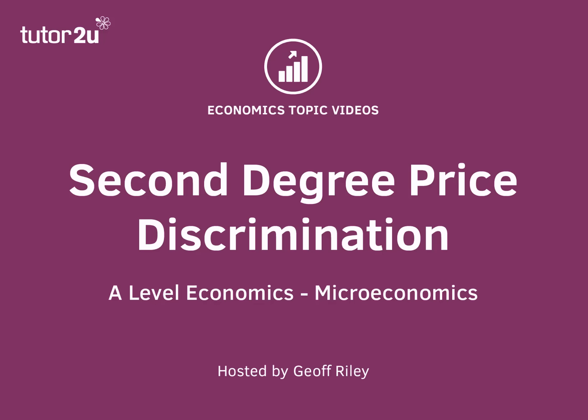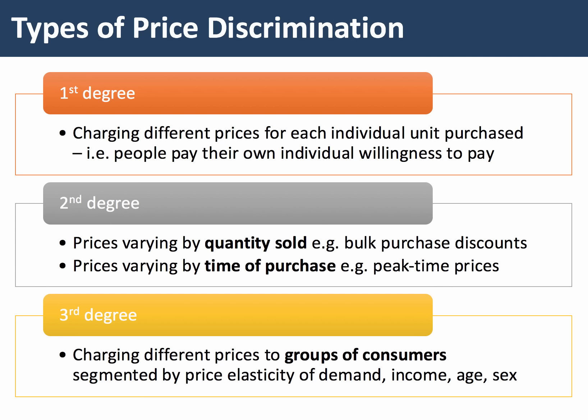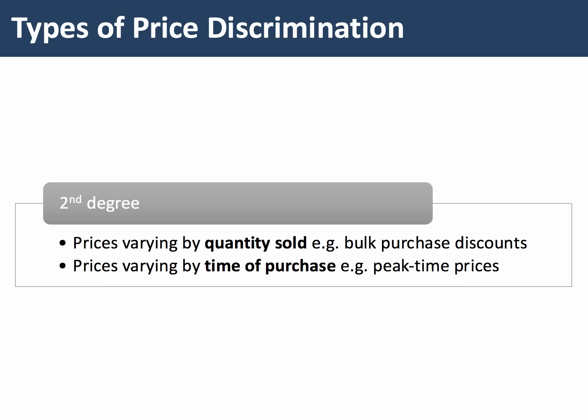In this topic video we're going to be focusing on second degree price discrimination. Price discrimination is where a business charges a different price to different groups of consumers for the same good or service, and for reasons not associated with cost. There are three main types: first, second, and third degree, covered in separate topic videos, but for this video we're just going to focus on second degree discrimination.